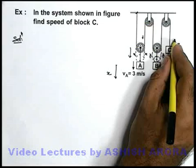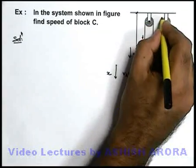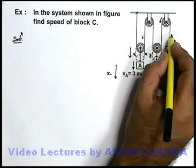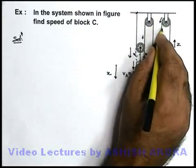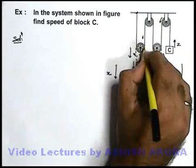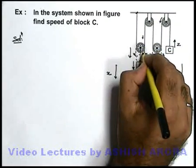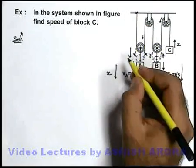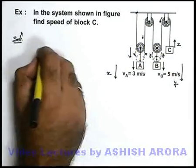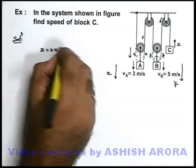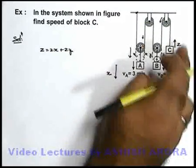If it is going up by a displacement z, we can say z length of the string will be transferred from this part to this part and that will be providing the total extension in the length in these two parts. Because at this point it is tied. So we can simply state here z will be equal to 2x plus 2y, just to make the strings tied.